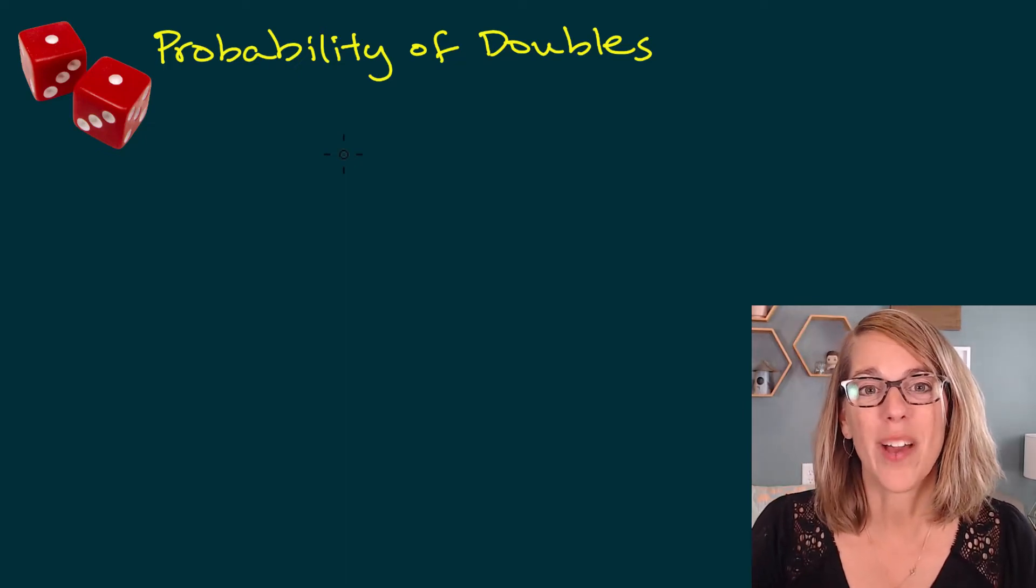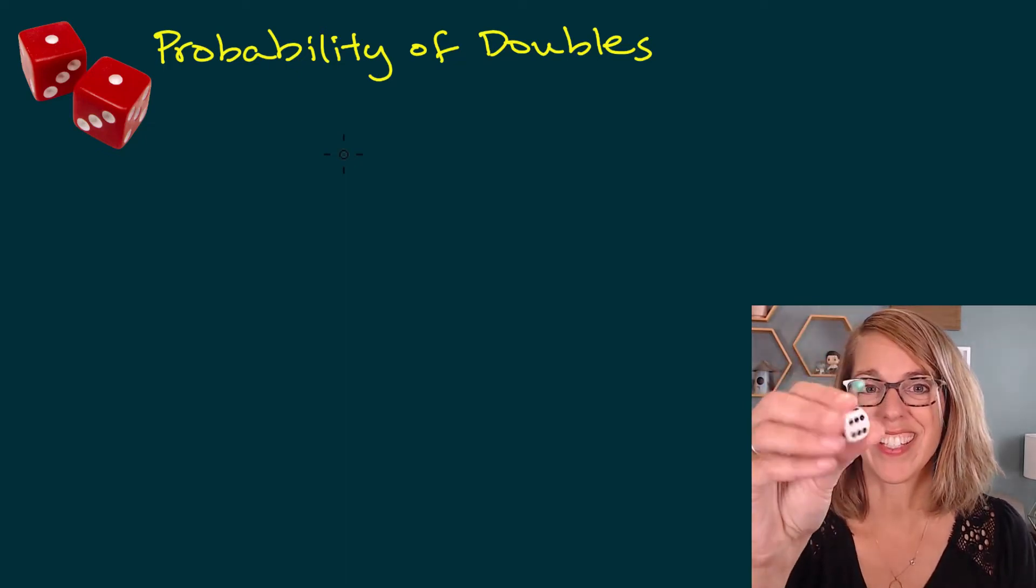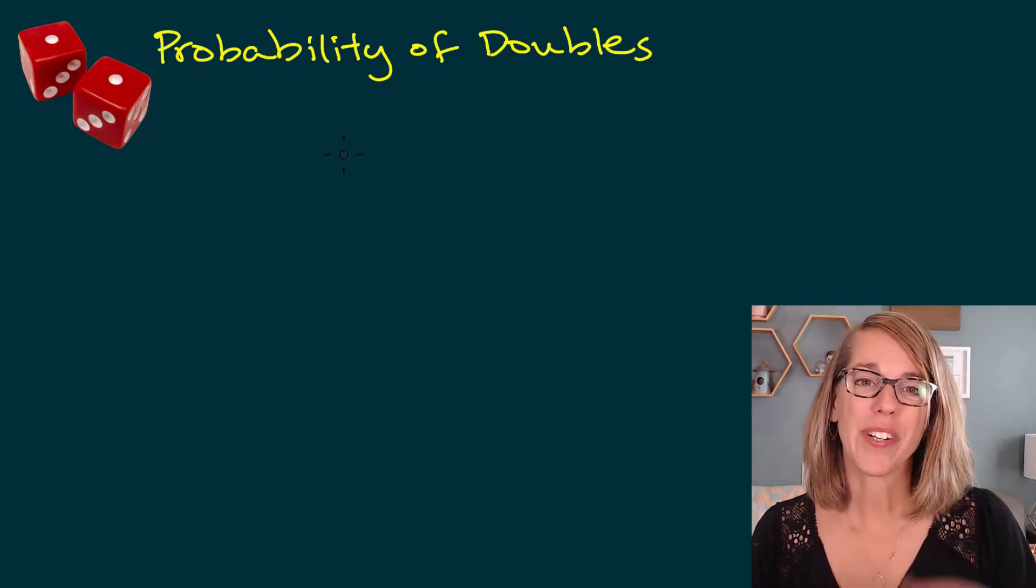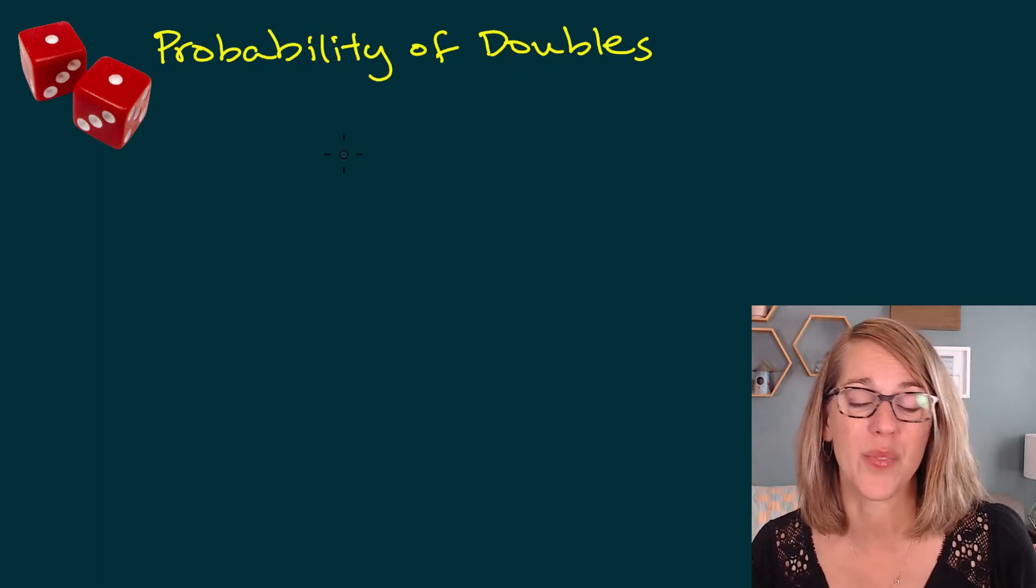We're going to find the probability of getting doubles on two of these six-sided dice. So I've got two of these. I want to start first with this example, the probability of getting two ones.